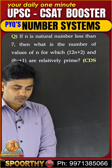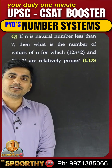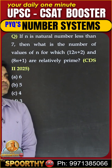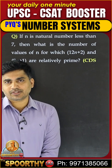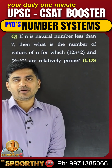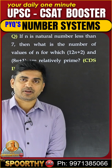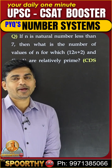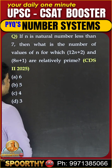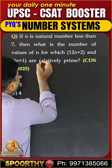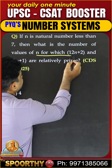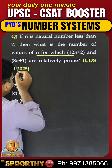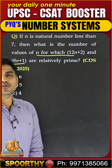Hi everyone, welcome to Seaside Classes. In this, they asked one question which is basically from basic numbers. N is a number which is less than 7 and it is a natural number. Natural numbers start from 1. The question is: for which values of n are 12n+2 and 8n+1 relatively prime?